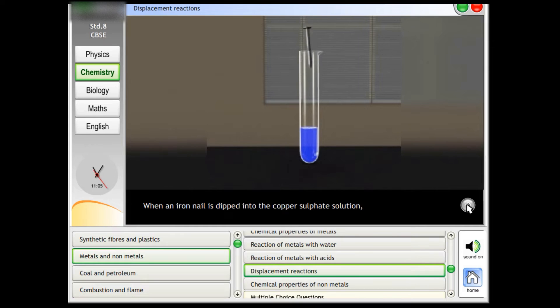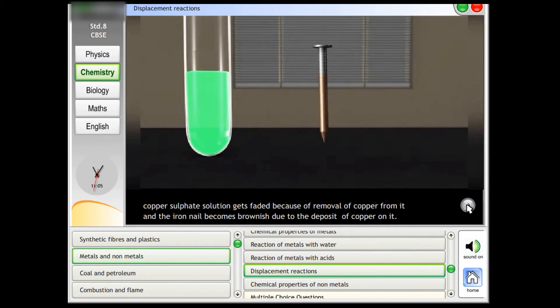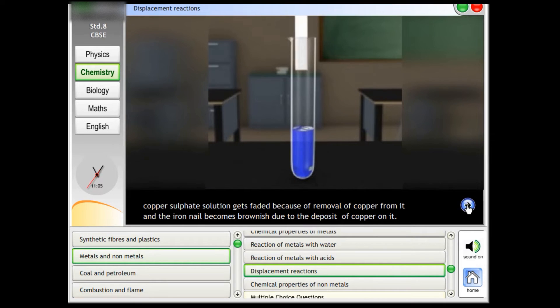When an iron nail is dipped into the copper sulphate solution, the copper sulphate solution gets faded because of removal of copper from it, and the iron nail becomes brownish due to the deposit of copper on it.